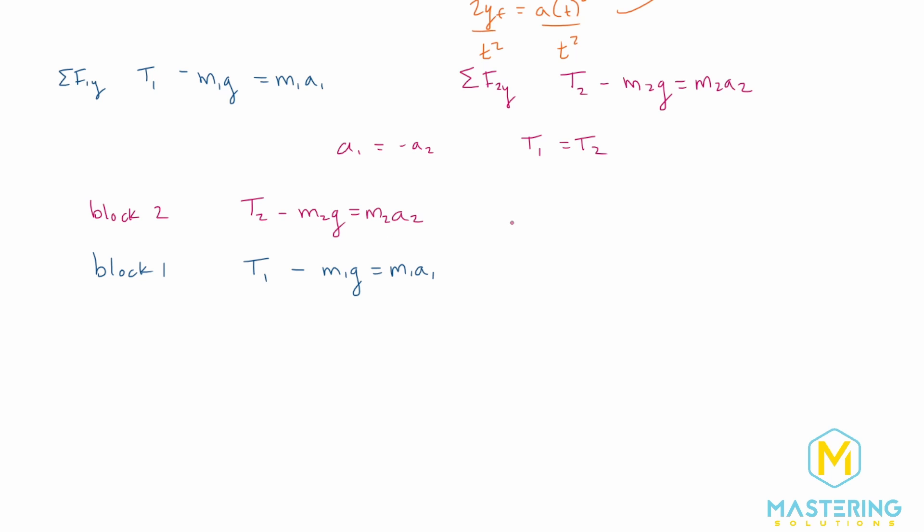So we'll add over m2a2. So t2 is equal to m2a2 plus m2g. But now when we plug this in, because t1 is equal to t2, we can get rid of the numbers because all of them are just t. So when we plug this in, we'll have m2a2 plus m2g. And then we'll minus m1g is equal to m1a1.